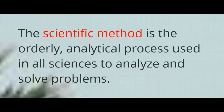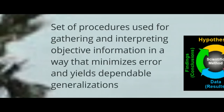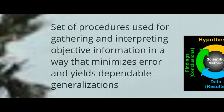We use the scientific method as psychologists. This is a process that is very specific, and we use it to answer questions and solve problems. This procedure allows us to gather and interpret objective information — note objective versus subjective. We want to remove as much bias as possible and minimize error, so we can get results that are reliable, and we can depend on generalizations from those results.